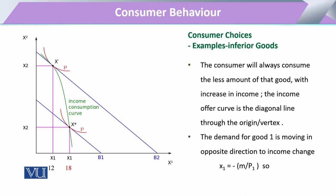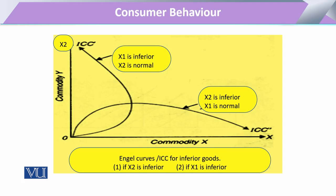If we take the example of an inferior good, something different happens. With the increase in income, the consumer shifts demand away from the commodity treated as inferior — rather than increasing consumption, the consumer reduces it. Joining these two points gives an income consumption curve that is upward but backward bending. If commodity X2 is treated as inferior, the consumer will have a backward-bending curve towards X2, while if X1 is treated as inferior, the income consumption curve bends backward towards X1.